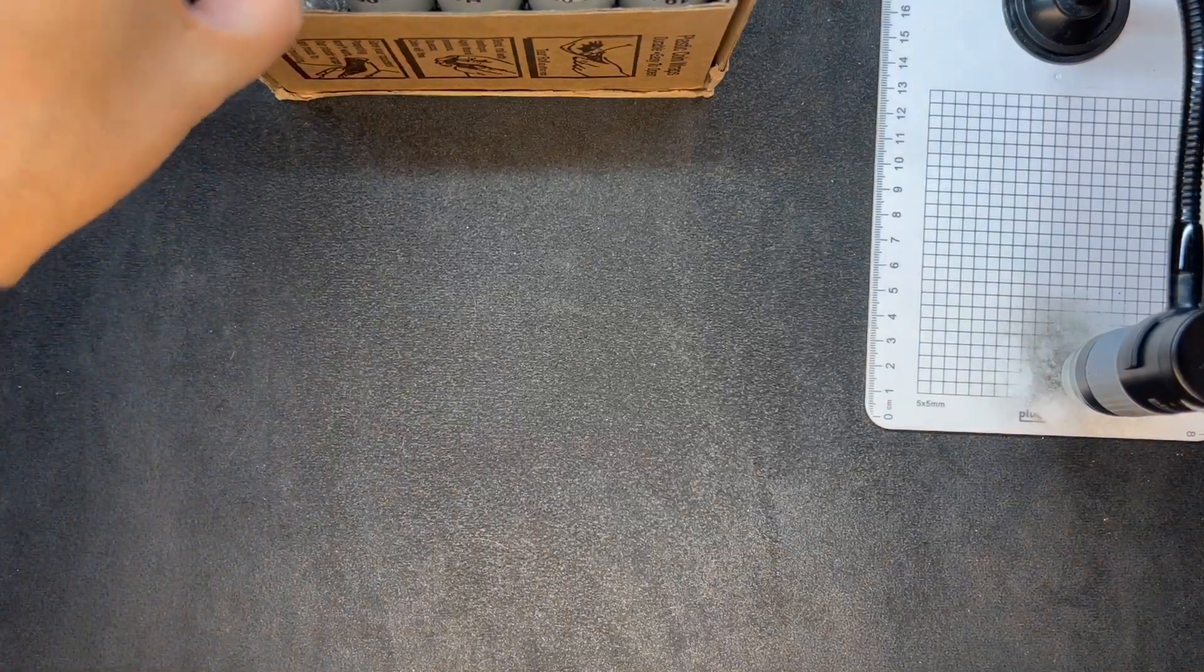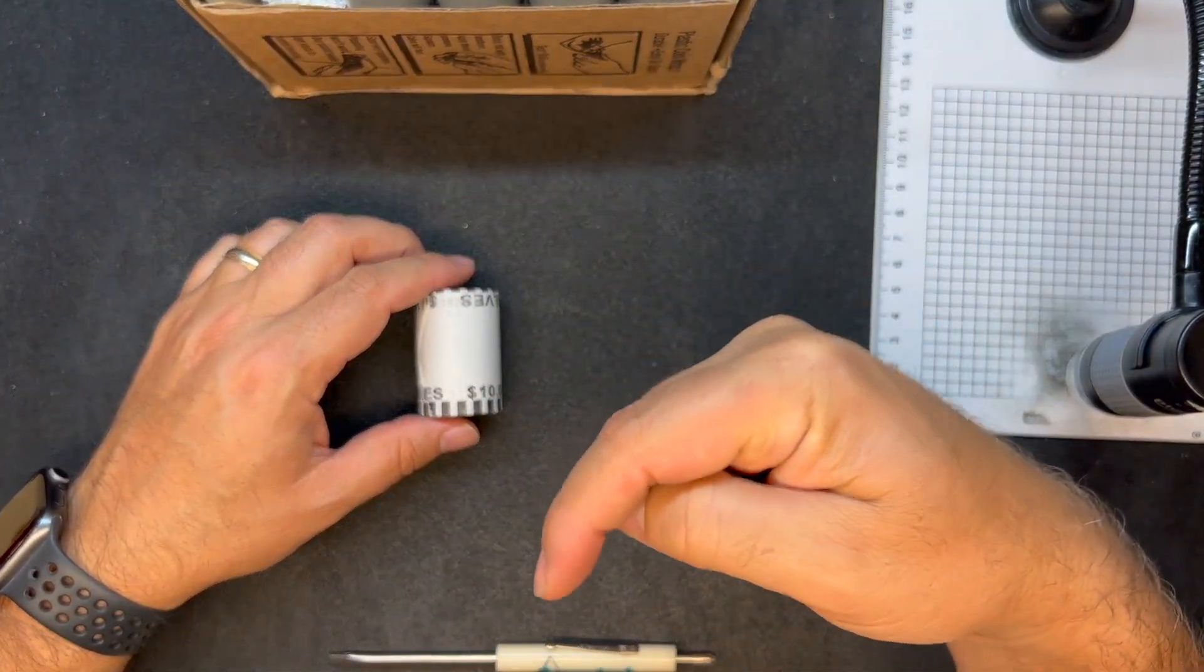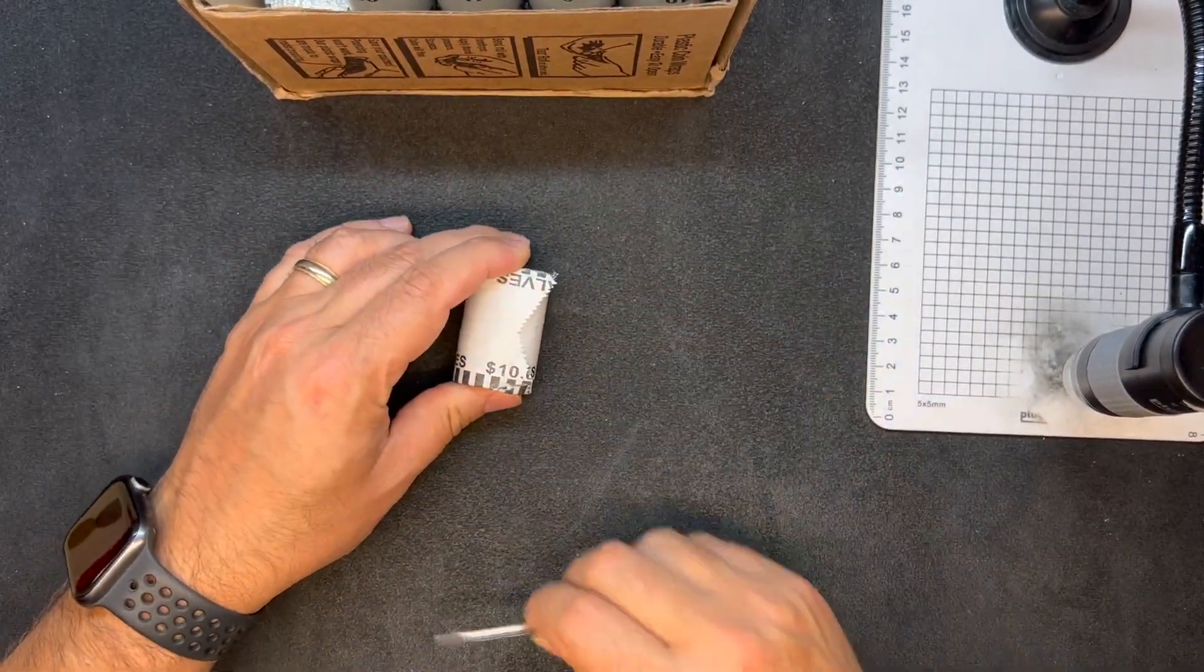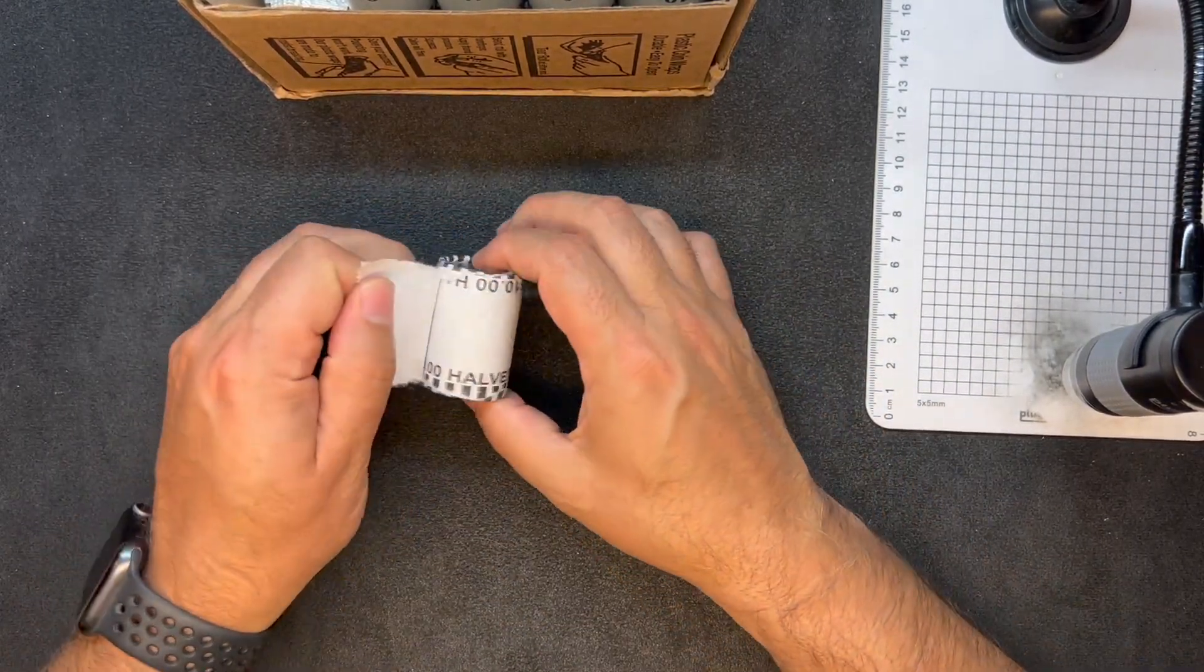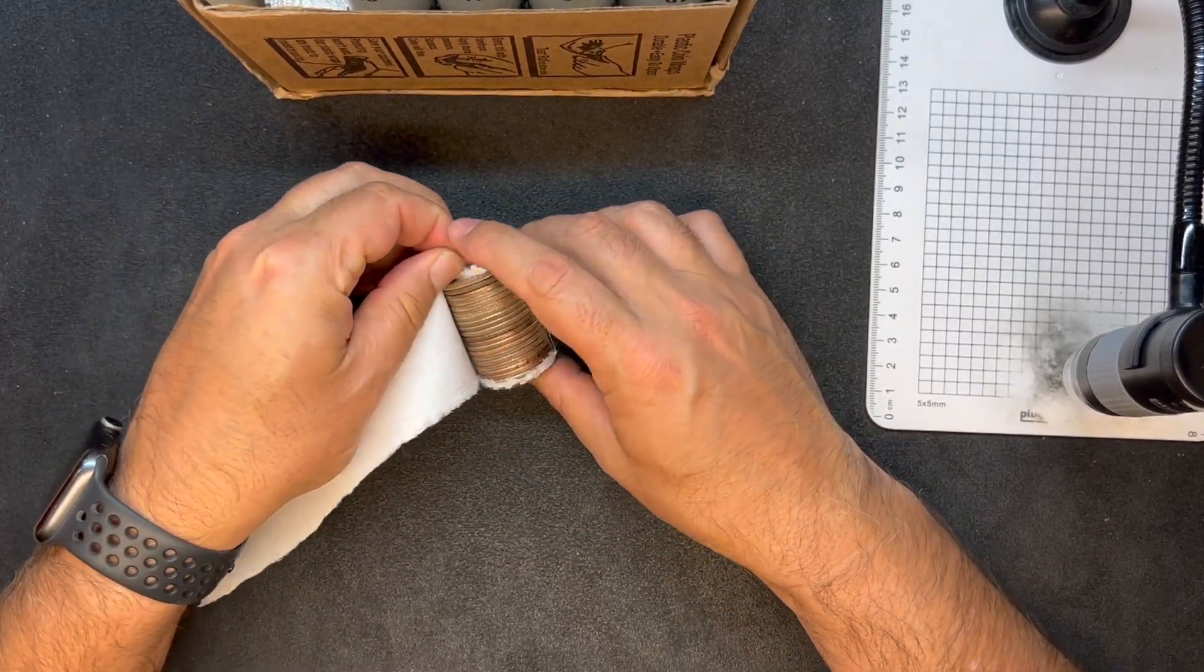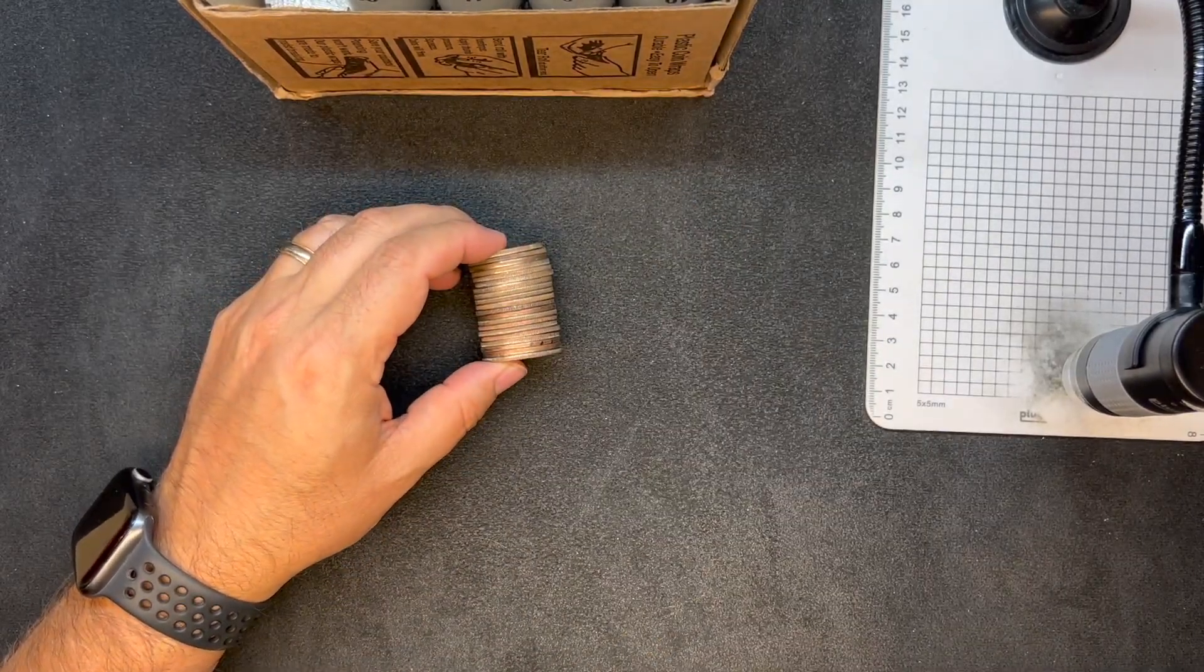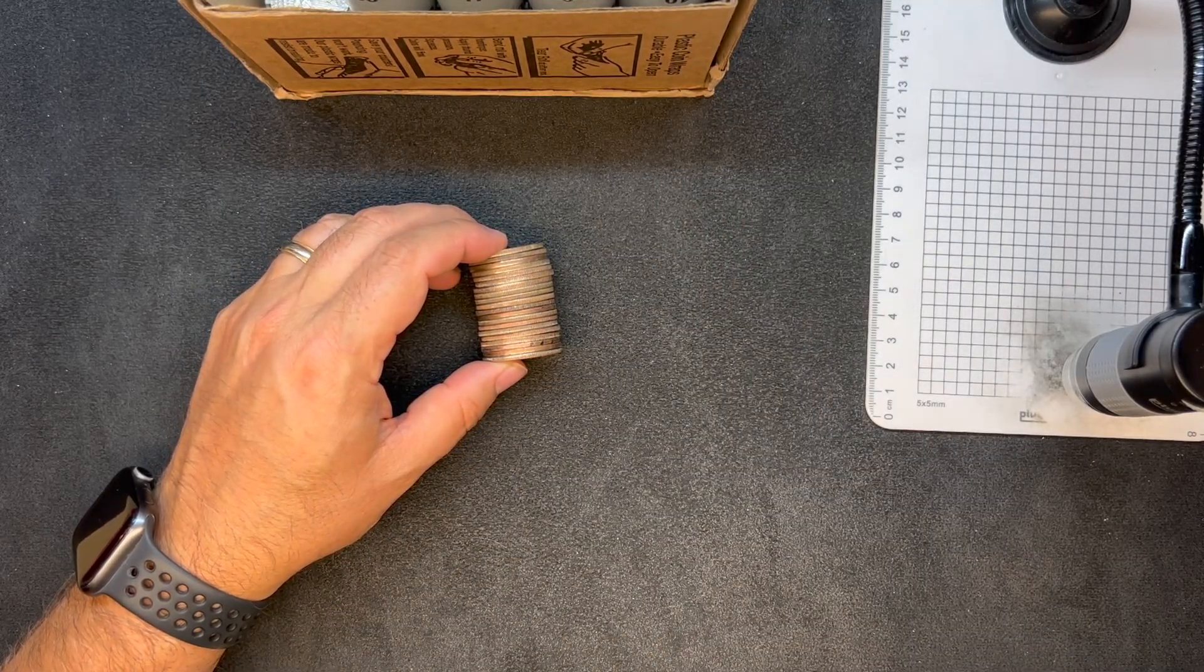So if you are new to coin roll hunting, I do have a document in the description down below that has everything that I hunt for, whether it be half dollars, quarters, nickels, dimes, pennies. You can download that document. It is free to download and print and use for yourself. It's not pretty, it's just a nice listing of what I look for.